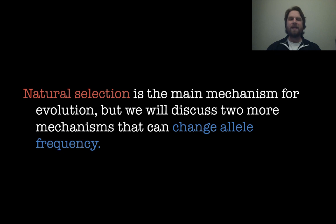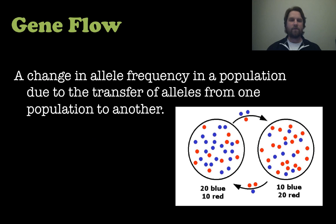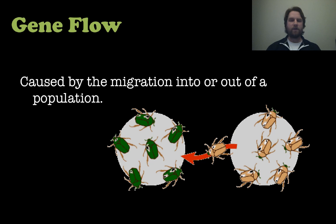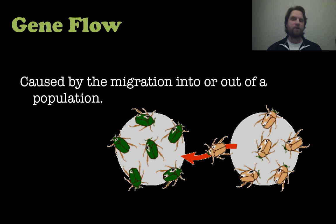Natural selection is the main mechanism for evolution, but there are more mechanisms that can change allele frequency. One of them is gene flow — a change in allele frequency in a population due to the transfer of alleles from one population to another. This is usually caused by migration into or out of a population, best represented by this example of beetles: a beetle carrying certain alleles leaves one population and goes into another, bringing its alleles into the new population and taking them out of the old.